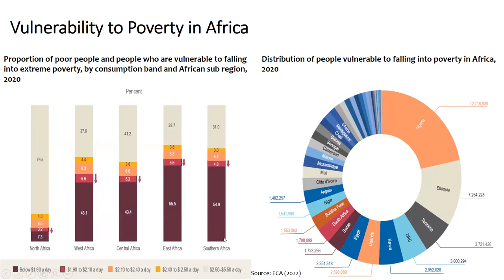The Economic Report on Africa also looks at the proportion of poor people and people vulnerable to falling into extreme poverty by consumption group and within African sub-regions in 2020. You can see how poverty differs across regions and across consumption bands. Looking at the distribution of people falling into poverty in Africa in 2020, Nigeria has the highest number of people in poverty, followed by Ethiopia, Tanzania, DRC, and Kenya.